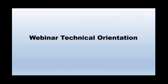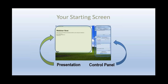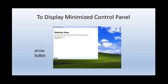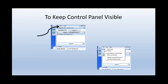We're going to do a technical orientation. Our software is fairly straightforward. We have the presentation on the left and on the right you have your control panel. Sometimes the software automatically collapses the control panel. If it's collapsed and you want to open it up, you can click on that orange button and it will expand. To make sure that this stops happening, you can click on the view button and deselect auto-hide the control panel and it will stay expanded.